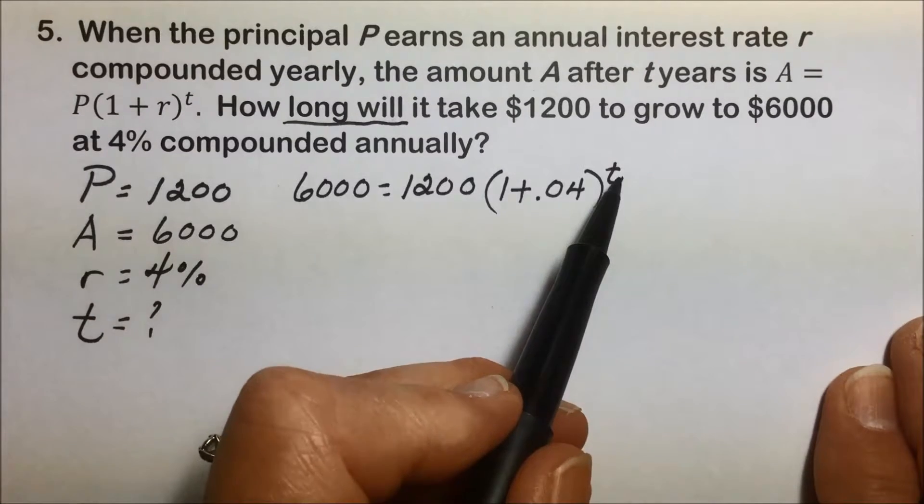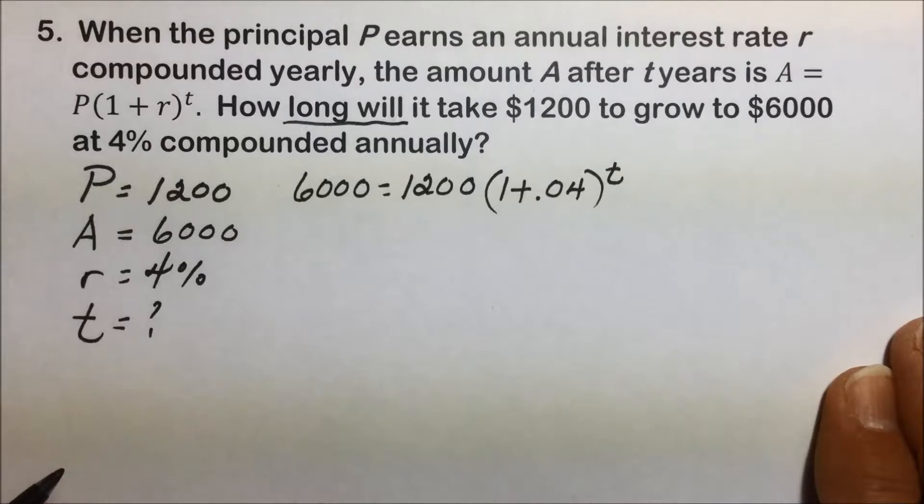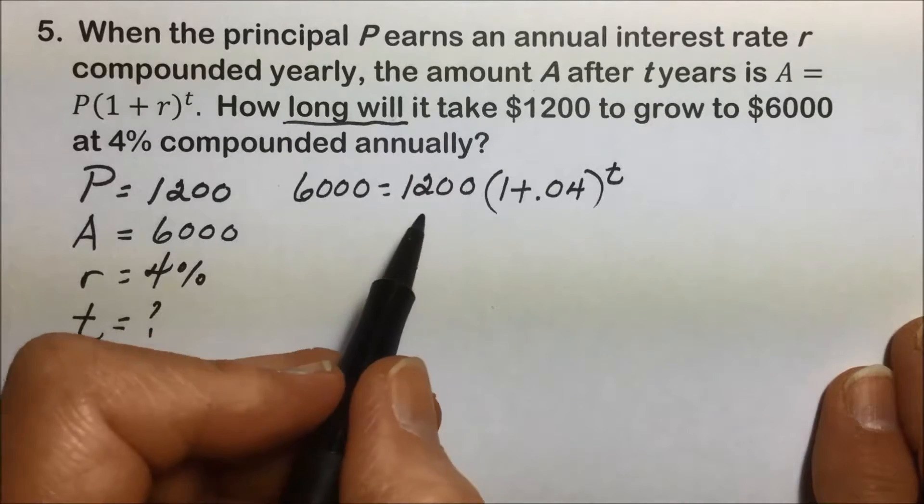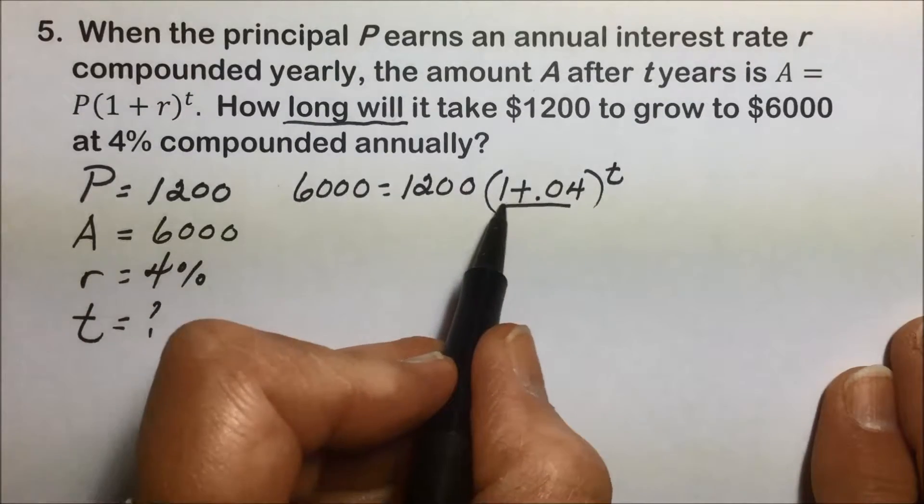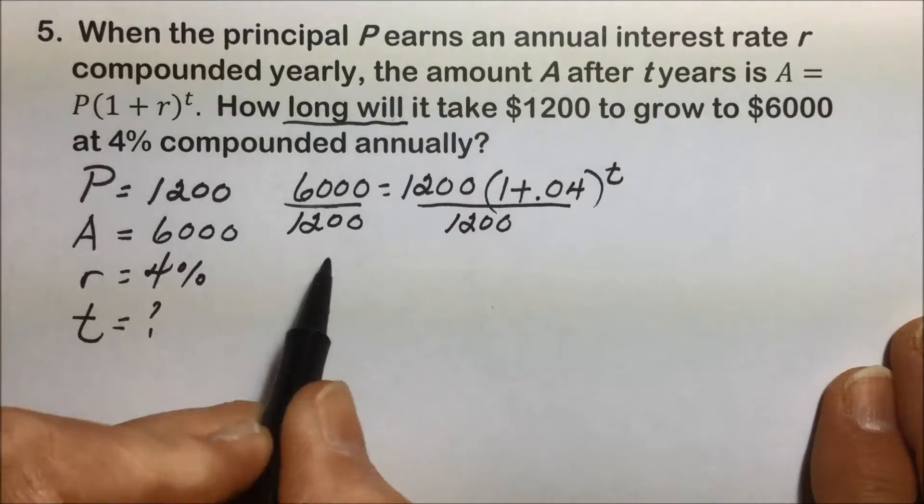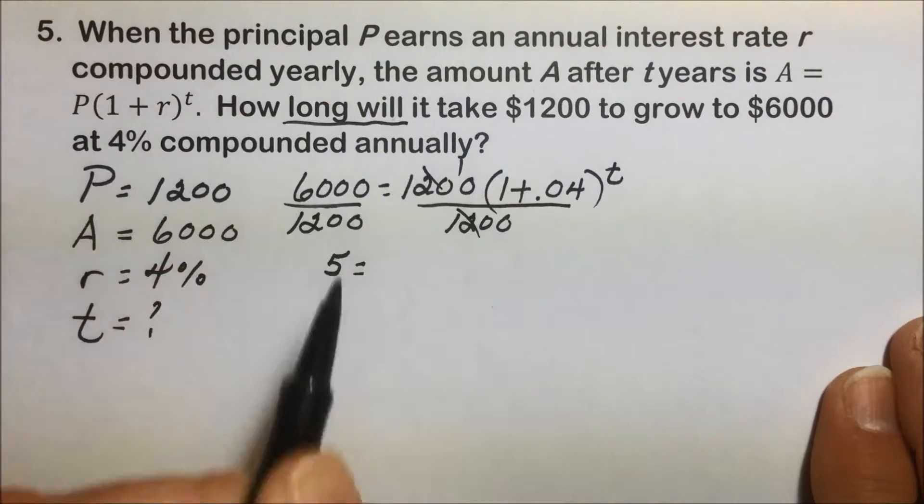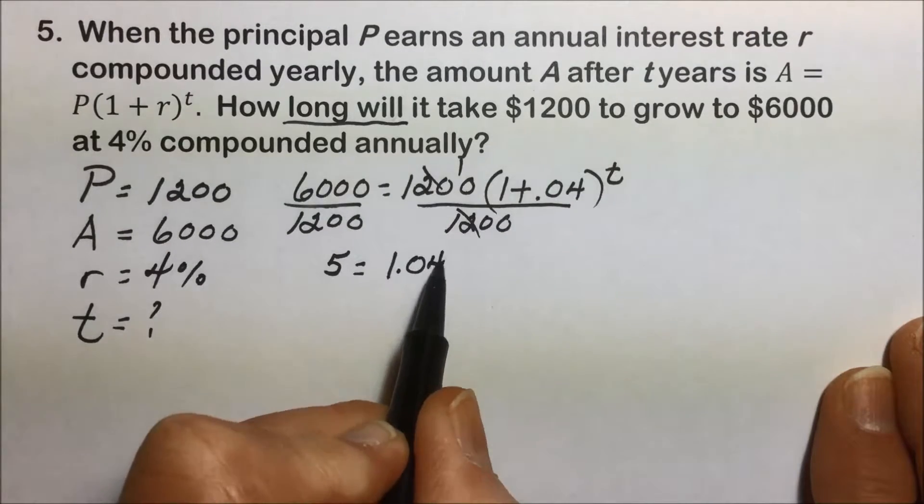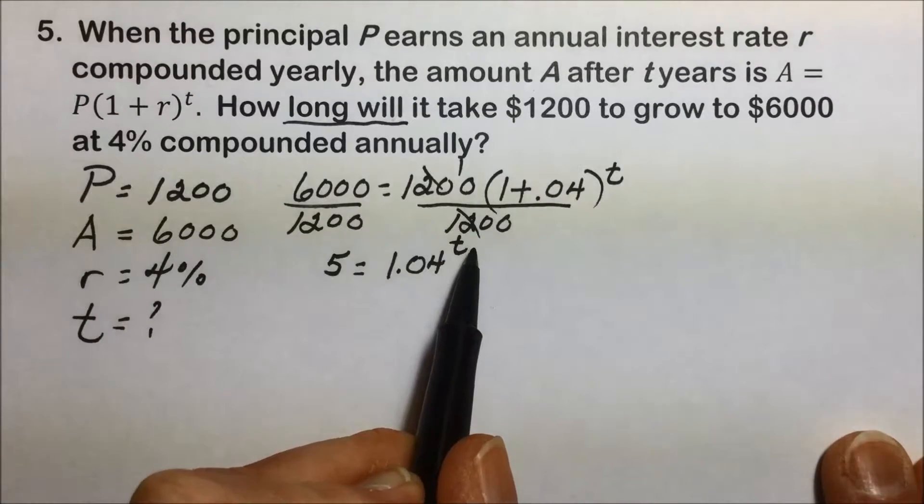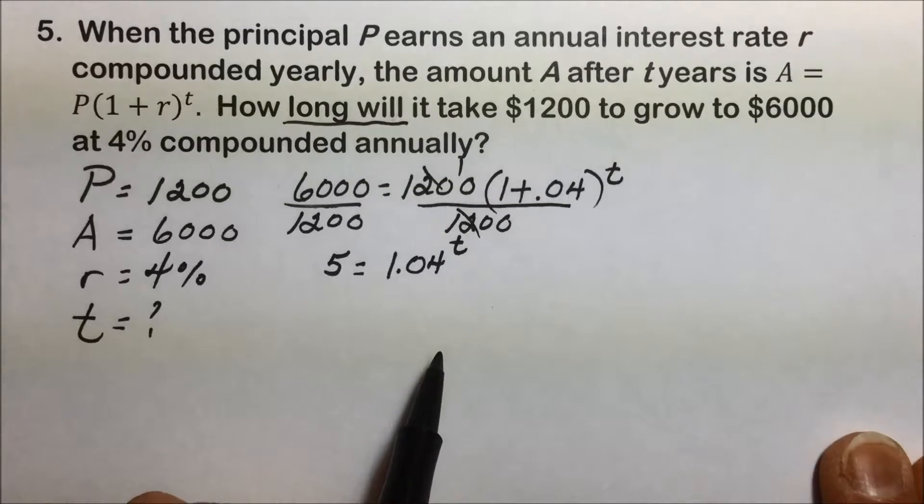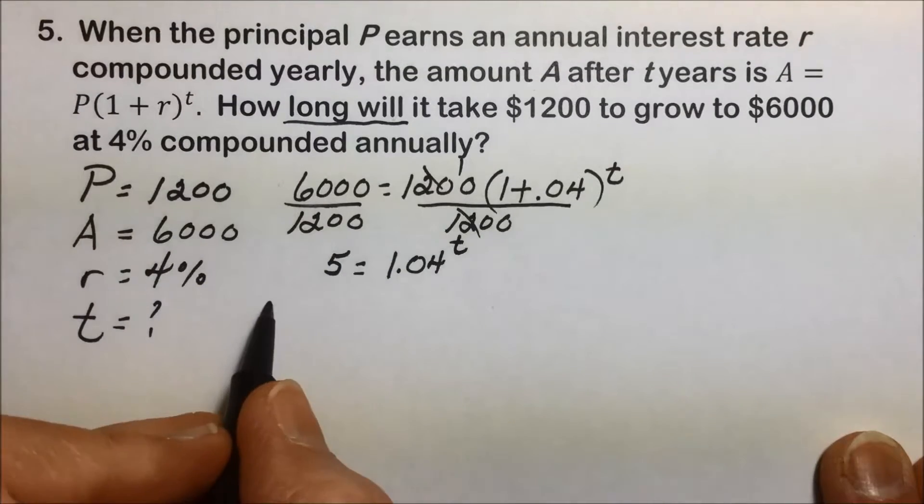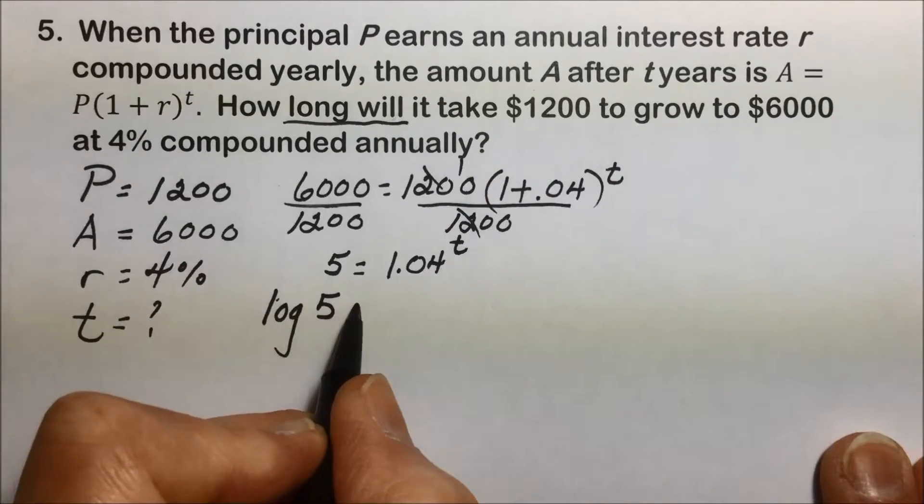Our variable is in the exponential position, which means we're going to have to take the log of this equation to get the variable out of the exponent. But in the meantime, let's simplify, first dividing both sides by 1,200 to get the variable as isolated as we possibly can. That leaves a 5 is equal to, 1,200 is canceling out, and adding 1.04 to the t power. And again, to get an exponent or a variable out of an exponential position, we're going to take the log of each side. Whether that's a common or a natural log, that's totally up to you. Either way would result in the same value.